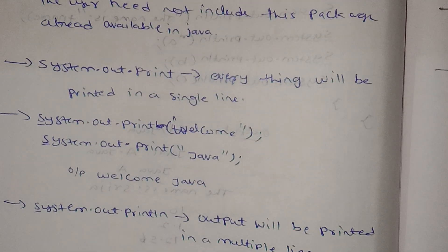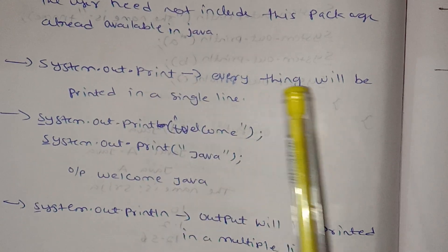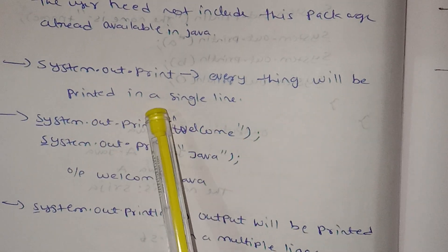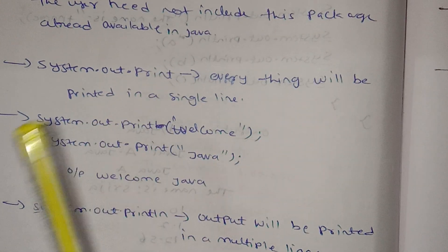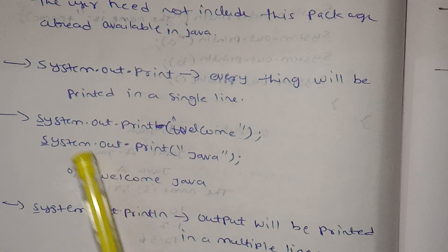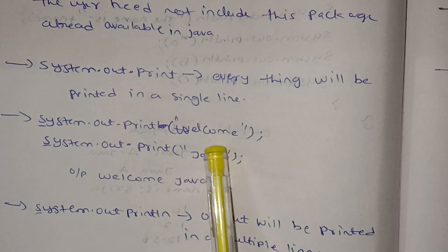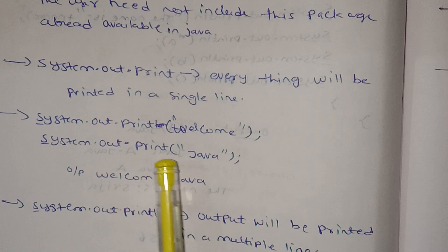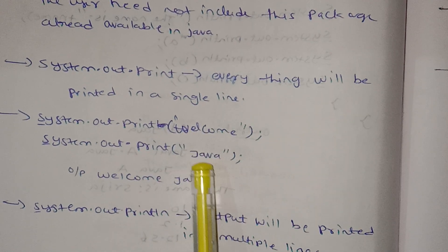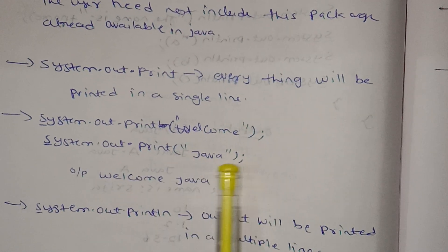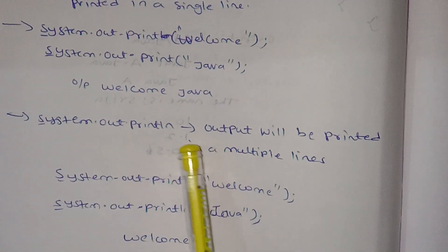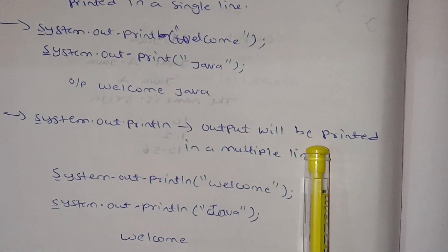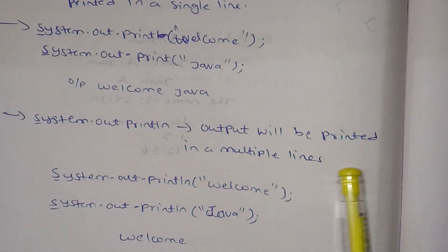system.out.print will print everything in a single line. For example, system.out.print("welcome") and system.out.print("java") will both be printed in a single line. system.out.println will print output in multiple lines.